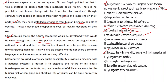Next question: 'How, according to Sir Leon, will computers break the language barrier?' The passage states: 'Computers could be plugged into a national network and be used like radios. It would also be possible to make tiny translating machines. This will enable people who do not share a common language to talk to one another without any difficulty.' The word 'this' refers to the tiny translating machines. So the answer is: by creating tiny translating machines.